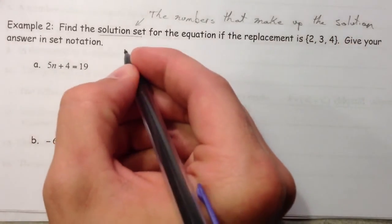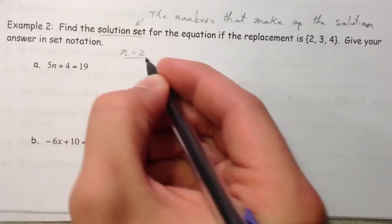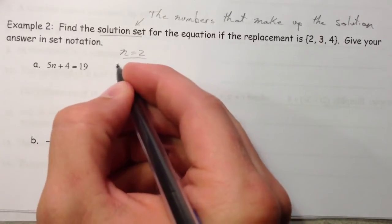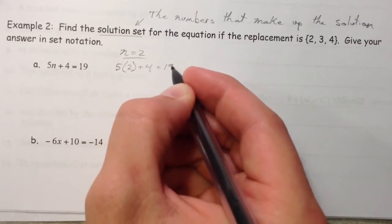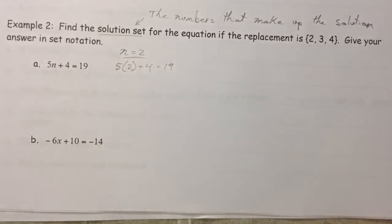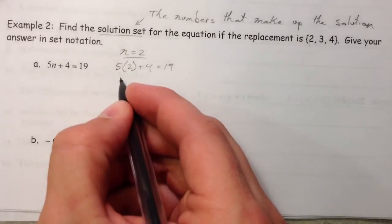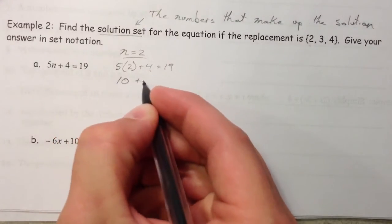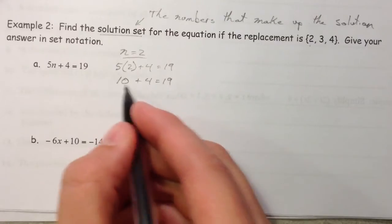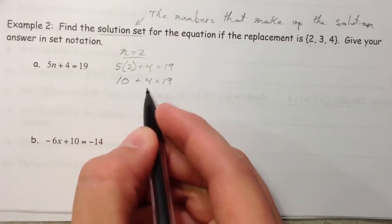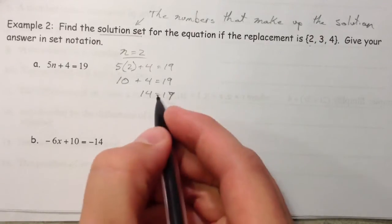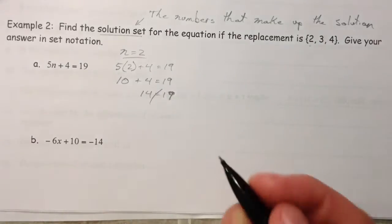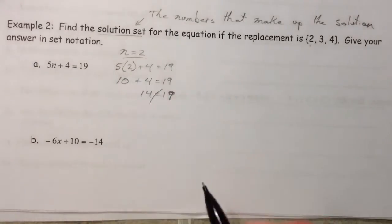And so what we're going to say is find the solution set, the numbers that make up the solution. So it could be more than 1, remember. So let's do n equals 2. So 5 times 2 plus 4 equals 19, because we're trying 2 because it's telling us. If you don't know, obviously the whole world is open to you and you're going to have to just take guesses and stuff at what it is. And actually we're going to be talking about how to actually solve these later on. So 5 times 2 is 10, 10 plus 4 is 14. 14 does not equal 19, so that is not a solution.